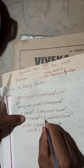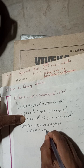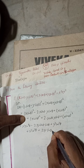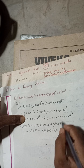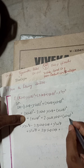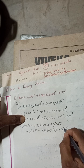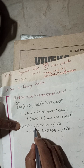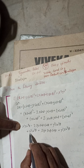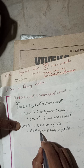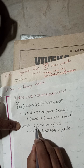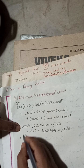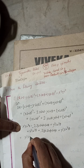Now you can see here this is -2xy sinθ cosθ and this is +2xy sinθ cosθ, so these two terms cancel each other out.